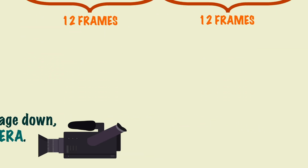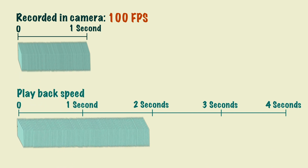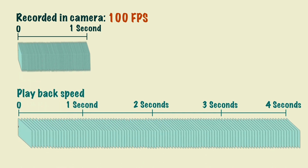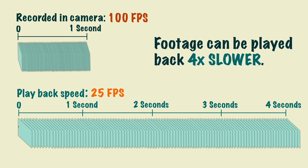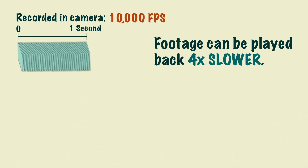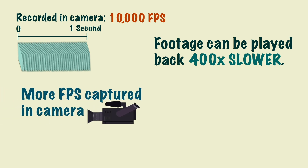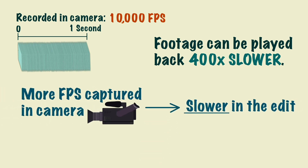For example, if you filmed 100 frames per second and spread this out across four seconds in the edit, then the frames per second in playback would be 25. Doing this would make the footage four times slower than watching it in real time. If you filmed 10,000 frames per second, you would be able to play back the footage 400 times slower than real time. The more frames per second you capture in camera, the slower you can play it back in the edit.